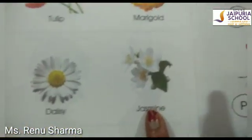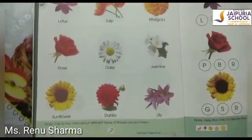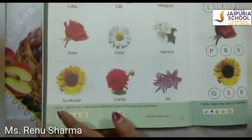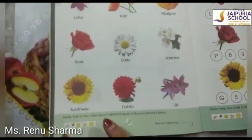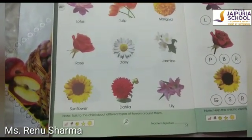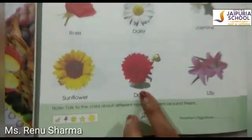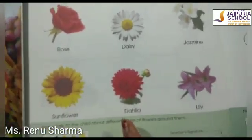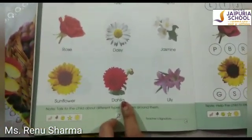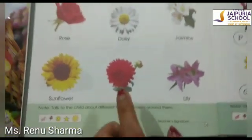Now we will come to jasmine. Have you seen it before? It is white in color and has a very nice smell. This is sunflower. Sunflower is in yellow color. Sunflower always faces the sun — that's why we call it sunflower. And this flower is dahlia. It is a brightly colored flower with long and thin petals, and it is in red color.